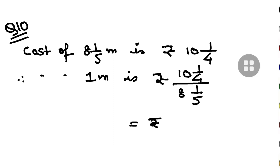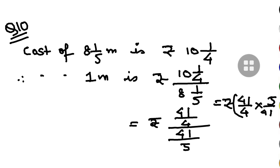Now 10 and 1 by 4 is 10 into 4 is 40, 40 plus 1 is 41. 8 and 1 by 5, 8 into 5 is 40, 41. So this will be further, rupees 41 by 4. If I do into 5 by 41, this will give us rupees 5 by 4.